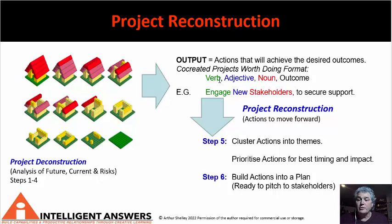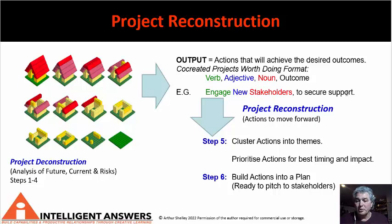These actions were in the format of co-created projects worth doing. That is a verb, an adjective, a noun, and an outcome, all linked. So a verb — an action word — an adjective — a describing word — a noun, the thing that you're taking that action on, and linked to some sort of outcome. For example, 'engage new stakeholders' — verb, adjective, noun — 'to secure support,' which is the outcome. So if we engage new stakeholders, we will get their support. You can see that the action on the thing is linked to the desired outcome that you're looking for.